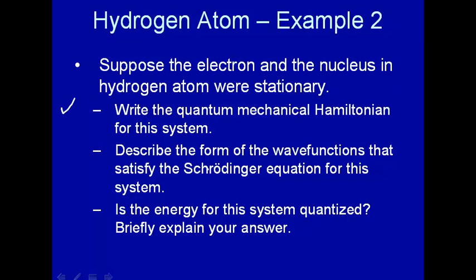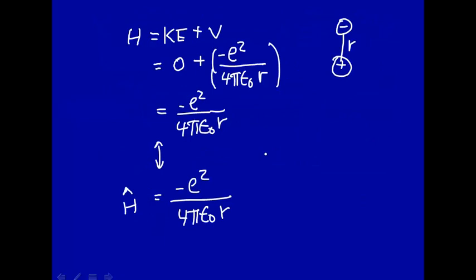Now describe the form of the wave functions that satisfy the Schrödinger equation for this system. Alright, so there's the Hamiltonian. Let's write down the Schrödinger equation. H psi is equal to E psi.